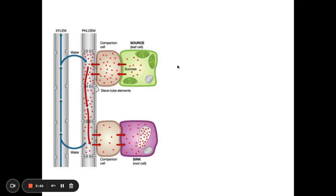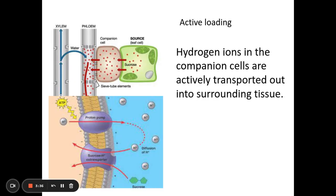So here we have our phloem and we have the assimilates moving from source to sink. We need to know about how the assimilates get into the phloem in the first place. So this part is active loading. What happens first of all, probably a better diagram at the bottom here, is that hydrogen ions are actively transported out of the companion cells into surrounding cells or the surrounding tissues.